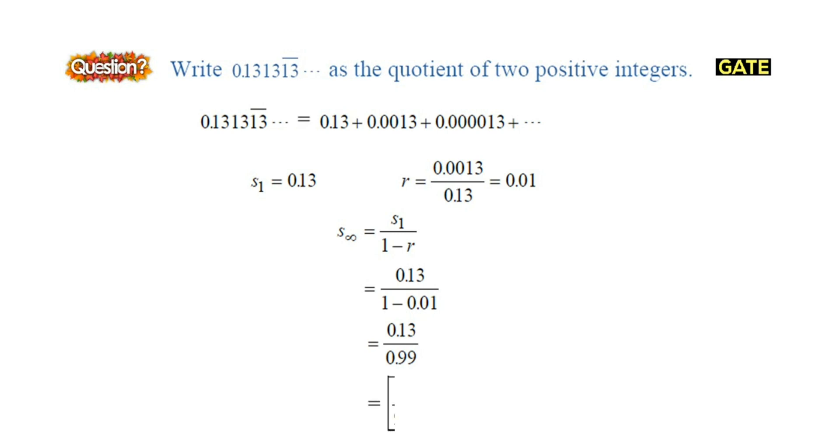After simplification, we get 13 divided by 99. Hence, the required quotient of two positive integers is 13 and 99.